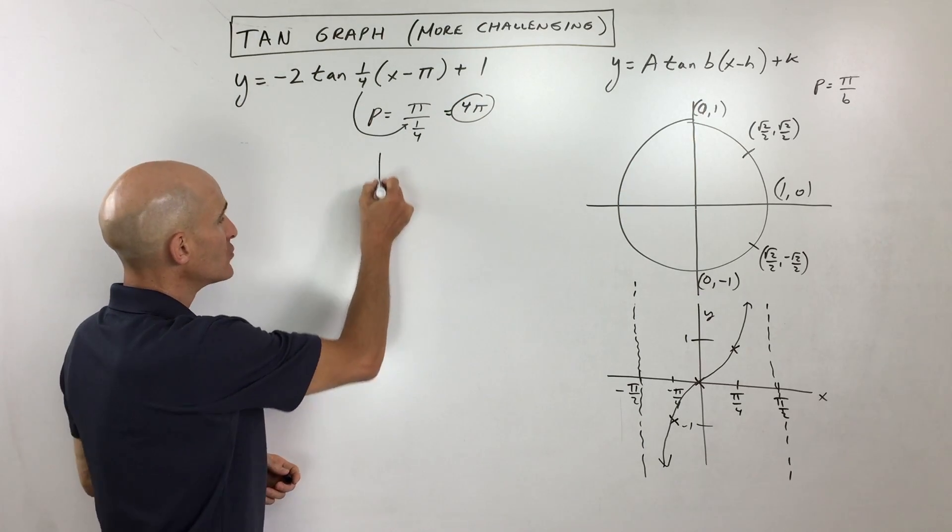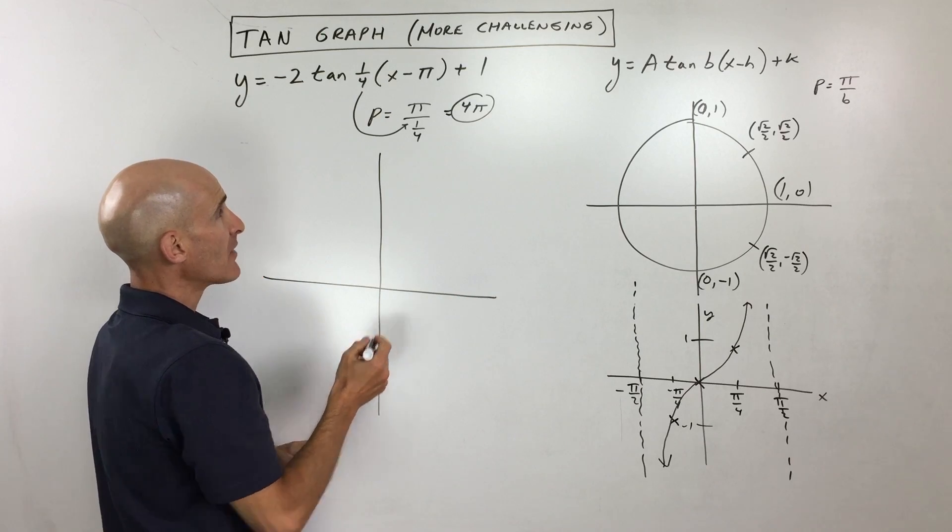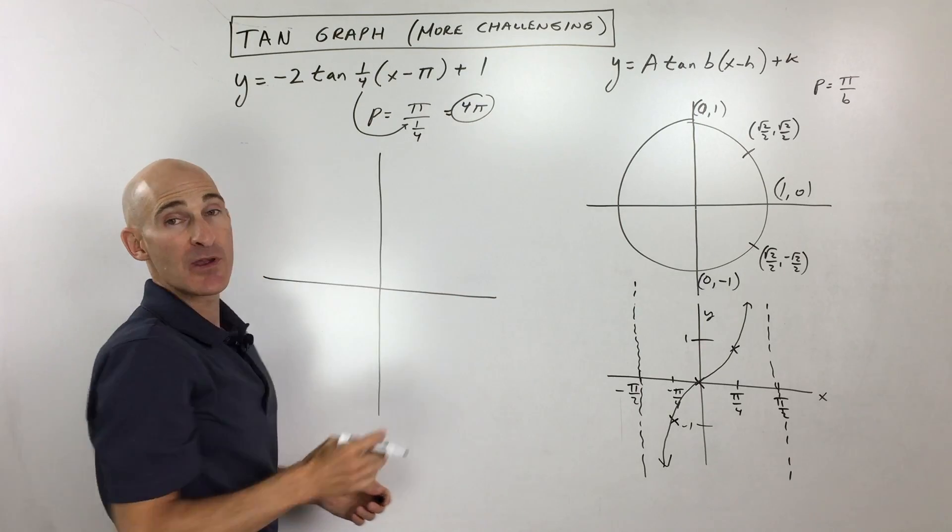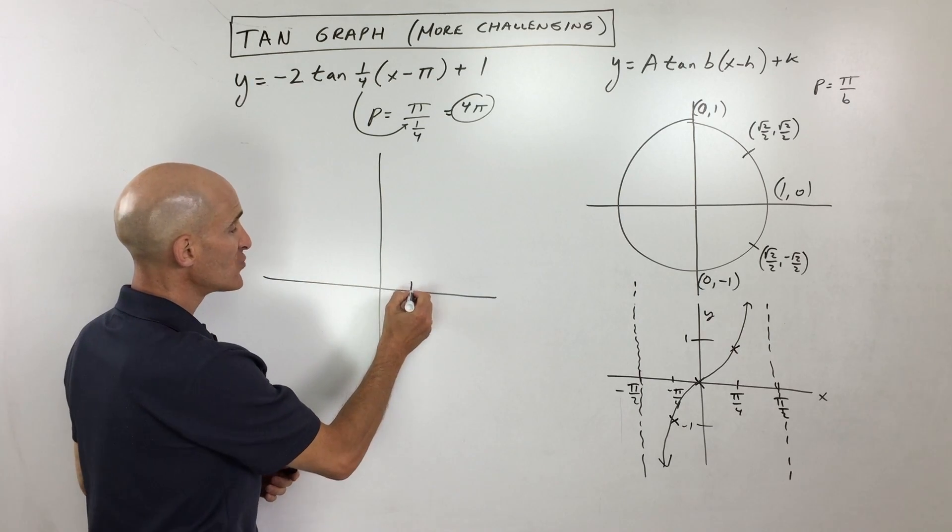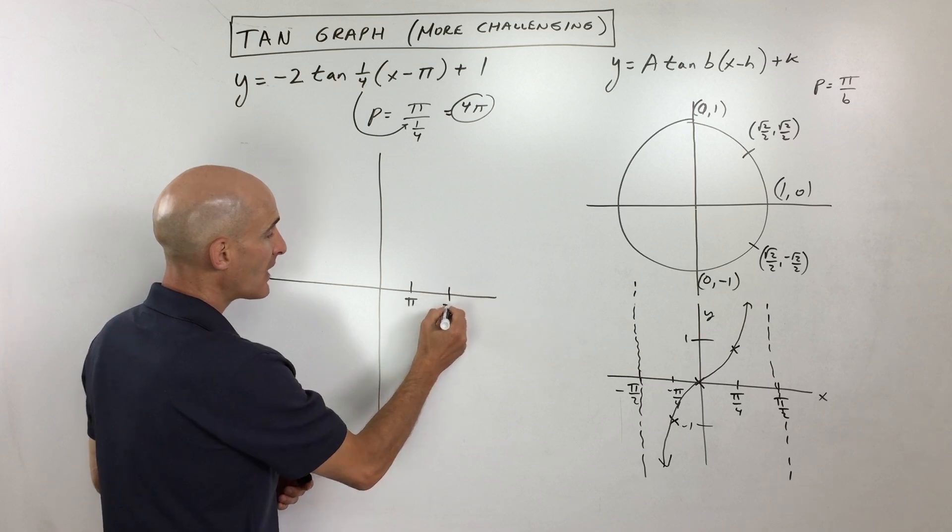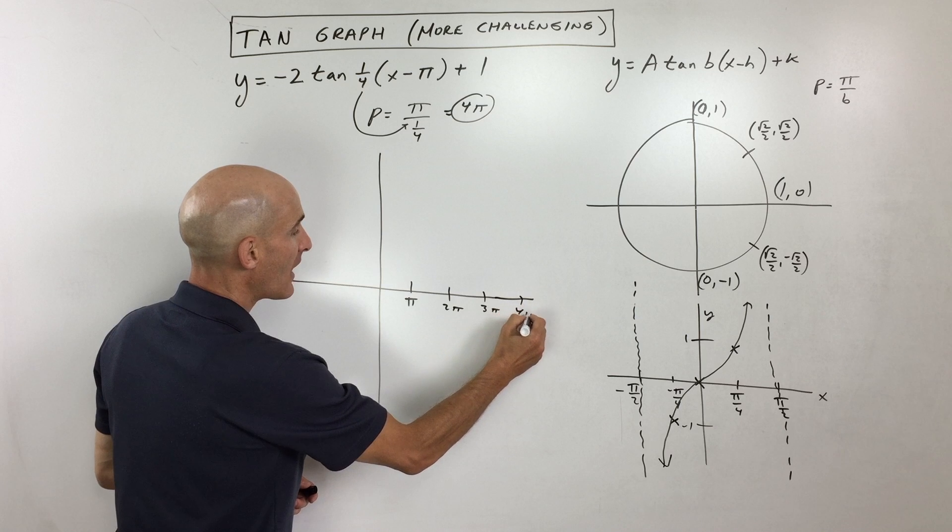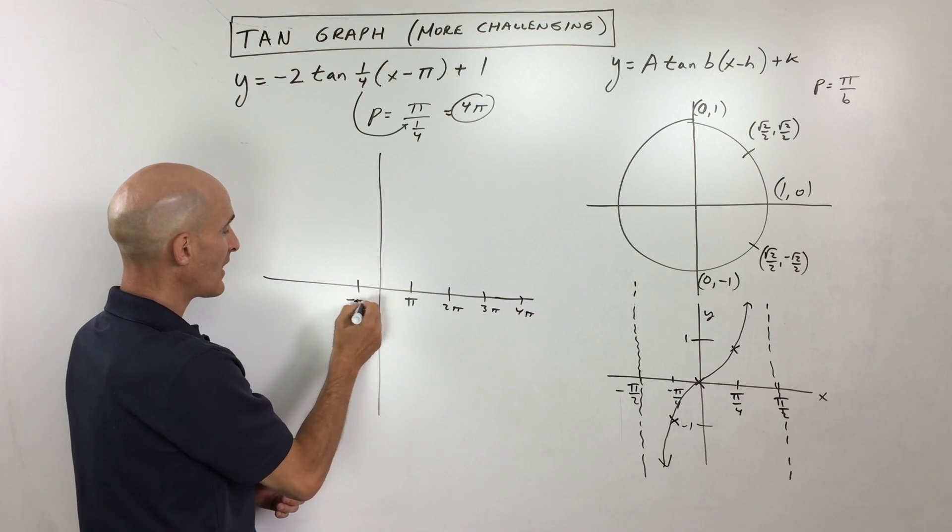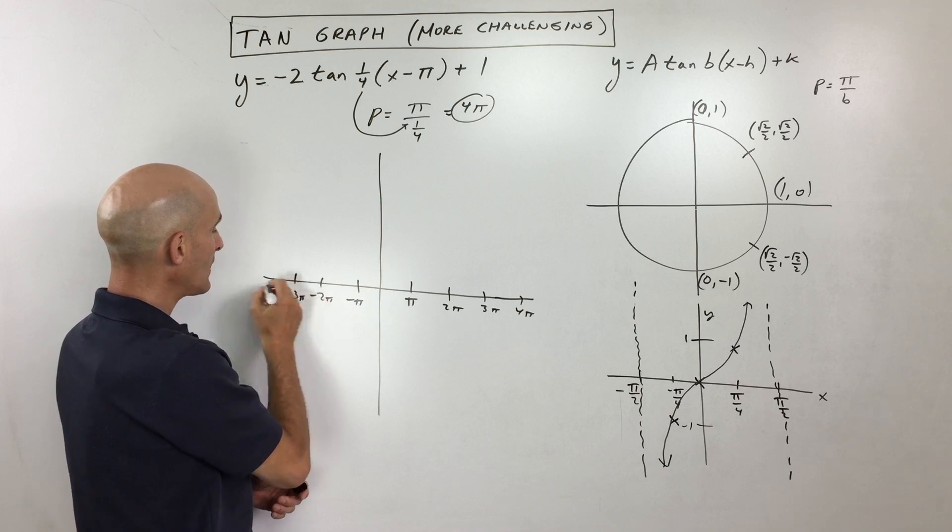So what I like to do is I like to draw my graph, and I like to look at the period and divide it up into quarters, into fourths. So basically what I'm going to do is I'm going to count by 4 pi divided by 4, which is pi. So 1 pi, 2 pi, 3 pi, 4 pi, and so on. And I'm just going to go here to the left, negative pi, negative 2 pi, negative 3 pi, and so on.